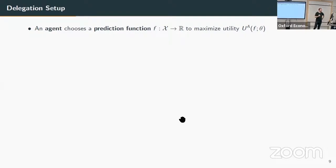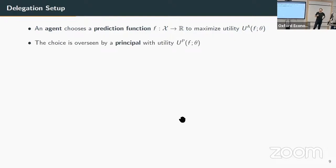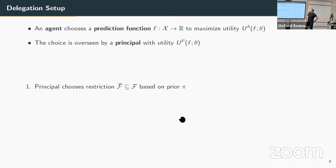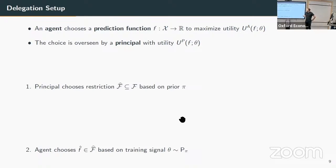The agent chooses that prediction function to maximize some utility that also depends on the true state of the world—information learnable from training data about who is likely to repay their loan. This choice is overseen by a principal whose utility may differ from the agent's, creating a basic conflict of interest. The principal has the power to choose restrictions on the functions the agent can use, based on prior information about the state of the world. The agent then chooses from that restricted class based on learning about the true state. So far this is a standard delegation setup.